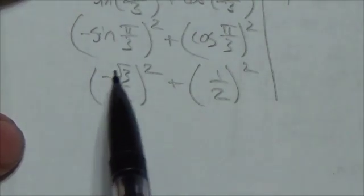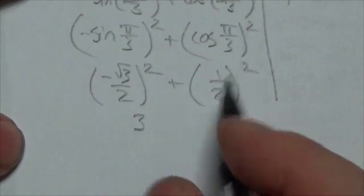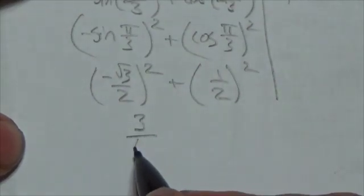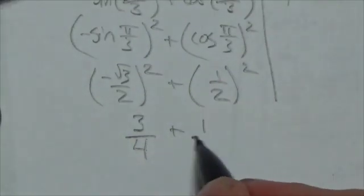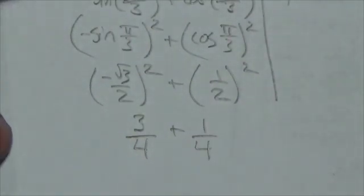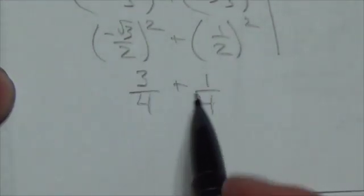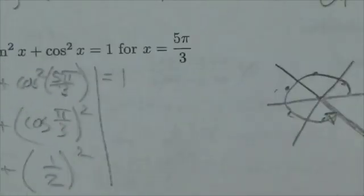Now, the square here is going to get rid of the negative because negative times negative will be positive. Root 3 times root 3 is just going to be 3. 2 times 2 is 4. Then over here, 1 squared is 1, 2 squared is 4. And now 3 quarters plus 1 quarter, that's just 1. And so there we go. We've been able to demonstrate that the left side and the right side are equivalent by plugging in that angle and evaluating.